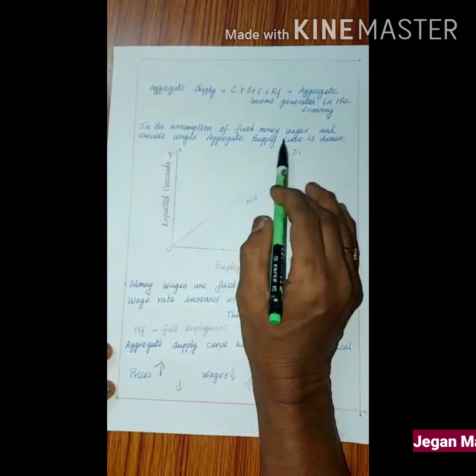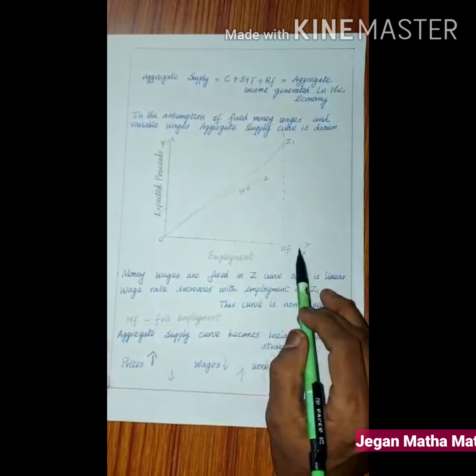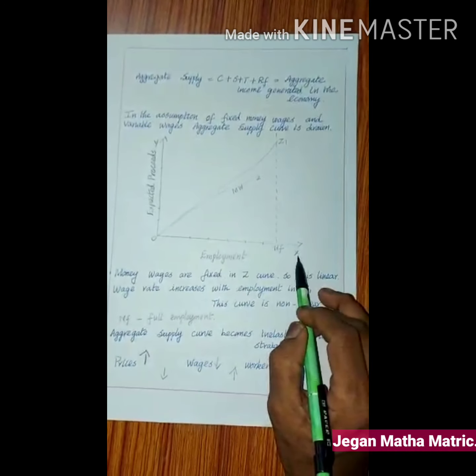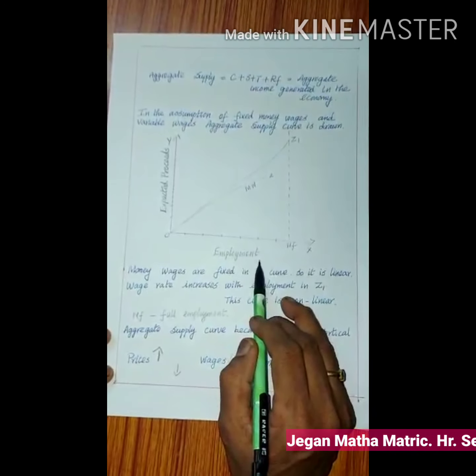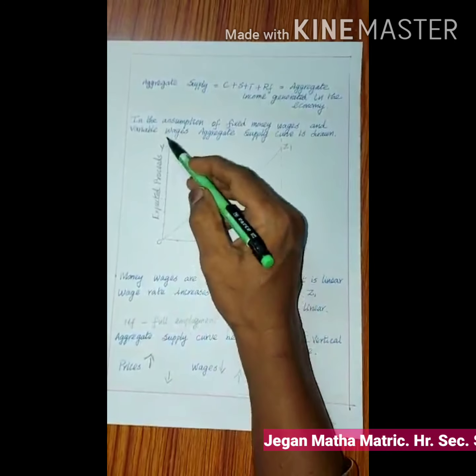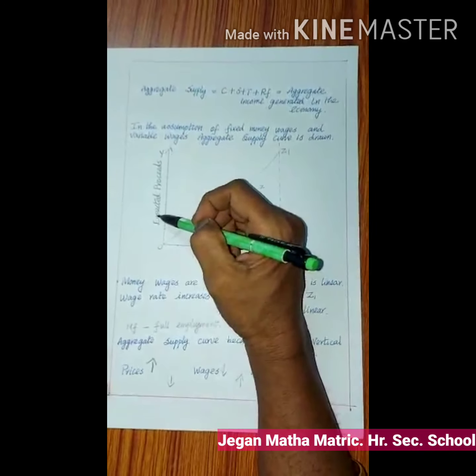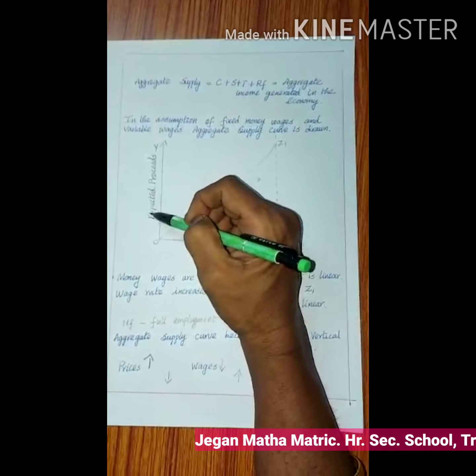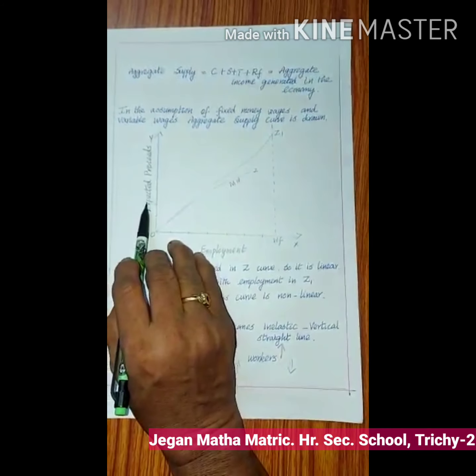In the assumption of fixed money wages and variable wages, aggregate supply curve is drawn in this figure. Horizontal line, X axis shows employment, and vertical line, Y axis shows expected proceeds or expected output.